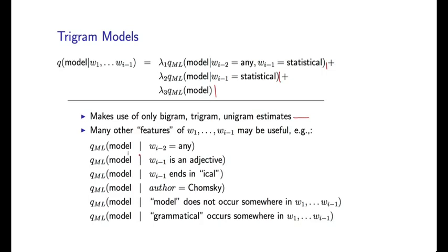For example, we might want to come up with an estimate that conditions on the fact that the word two positions back is the word any. Notice that we've in some sense skipped over w_{i-1} in this case and just looked at the word two back. We might condition on the fact that the previous word is an adjective. That gives us a coarser estimate which ignores the exact identity of the previous word. We might condition on the previous word ending in a particular suffix or prefix, for example, ical.